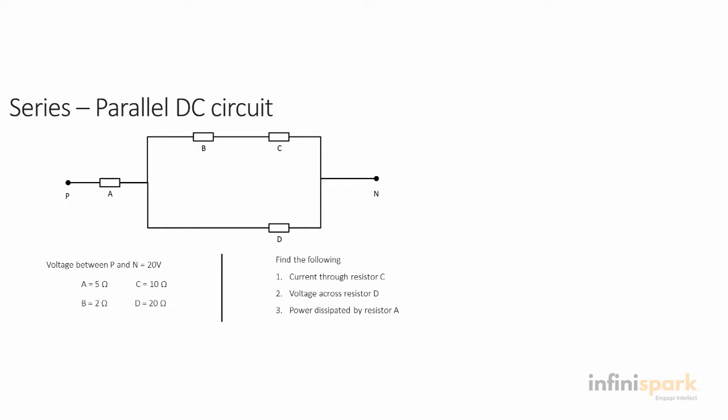Let's start by finding RT. To find RT, we'll solve this series parallel circuit. From this circuit, you can see resistors B and C are in series, so we'll start by finding that. RBC is going to be RB plus RC because they're in series: 2 plus 10 gives us 12 ohms.